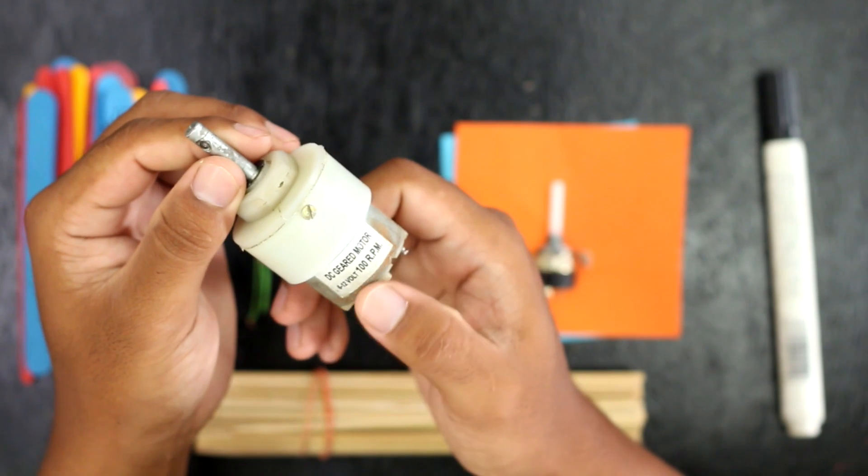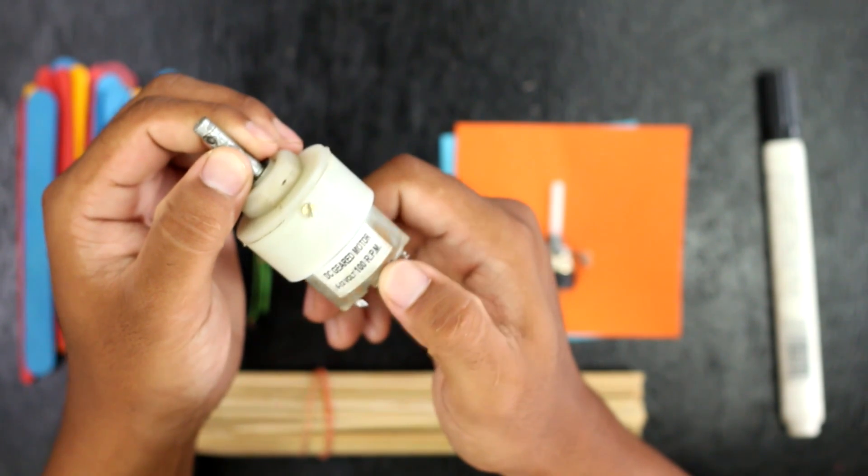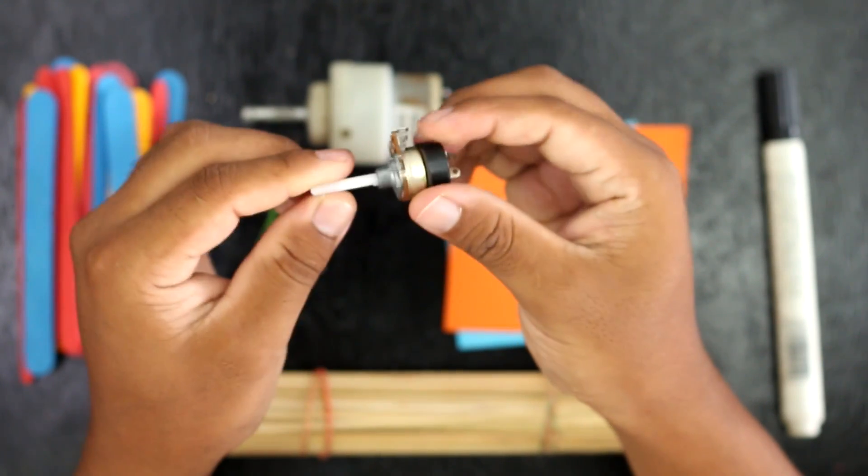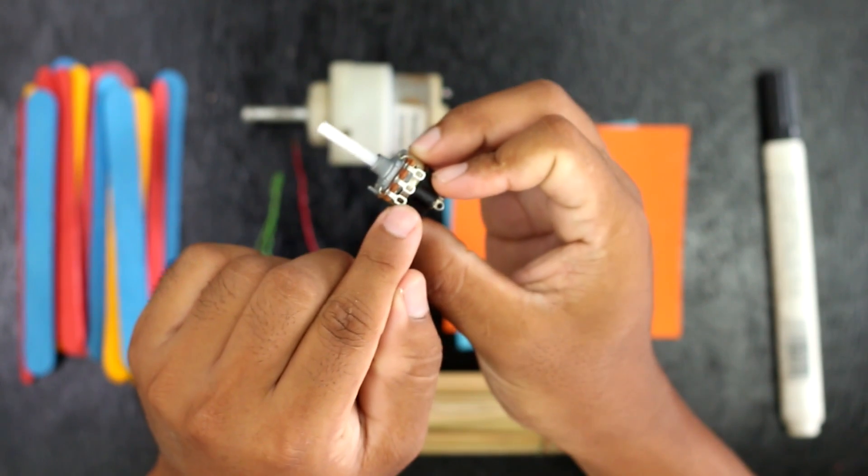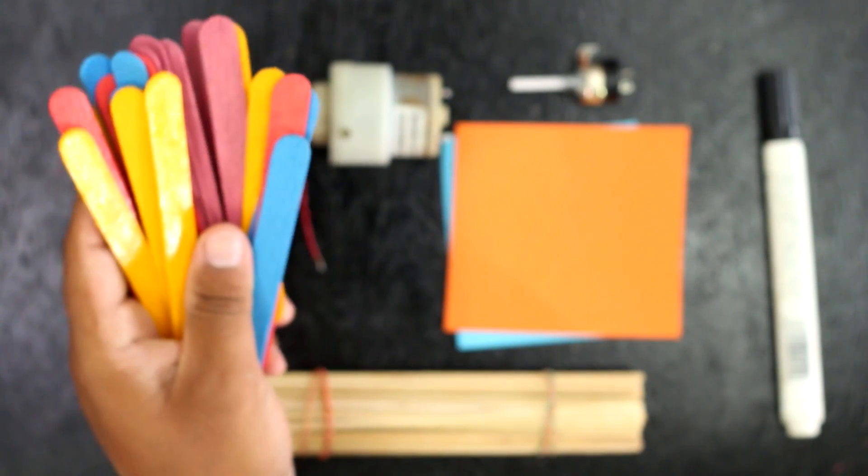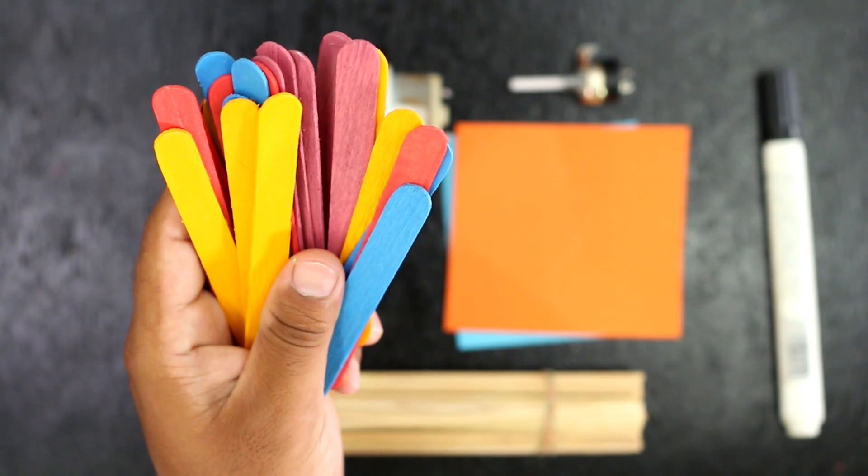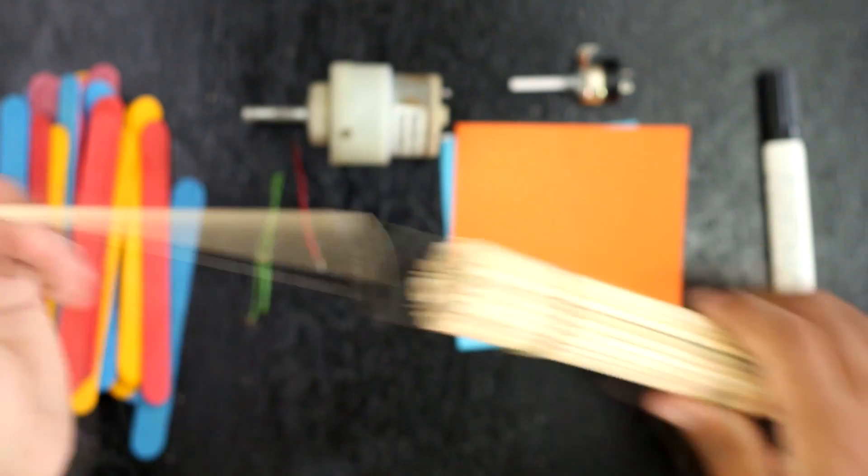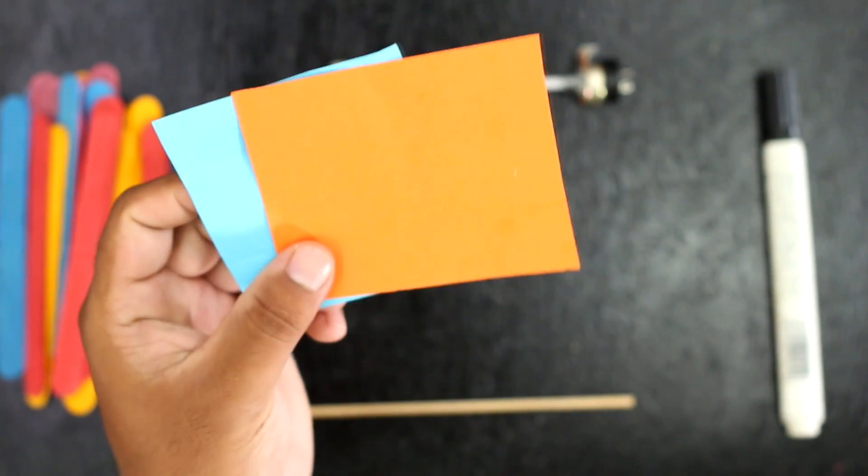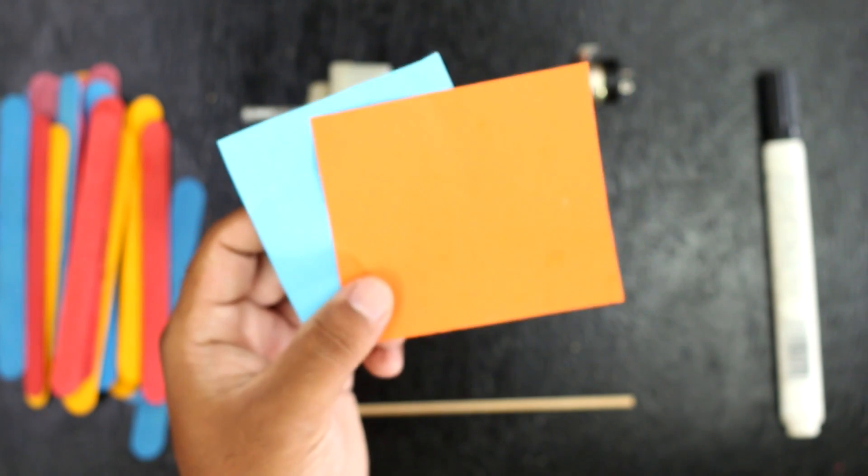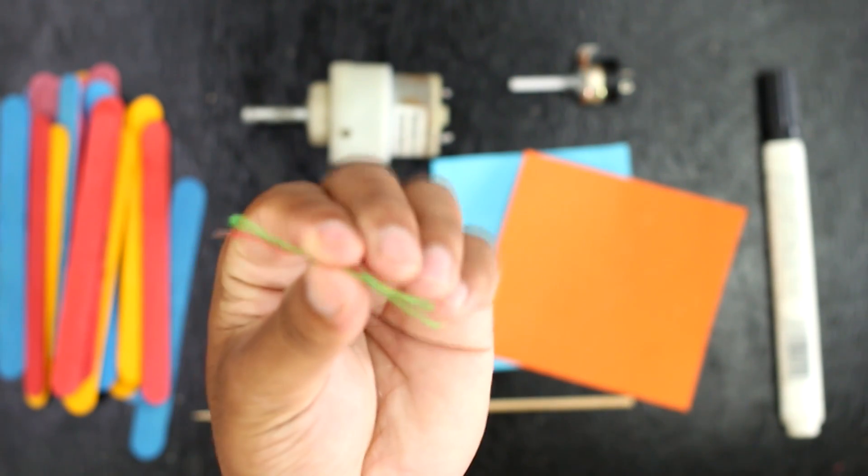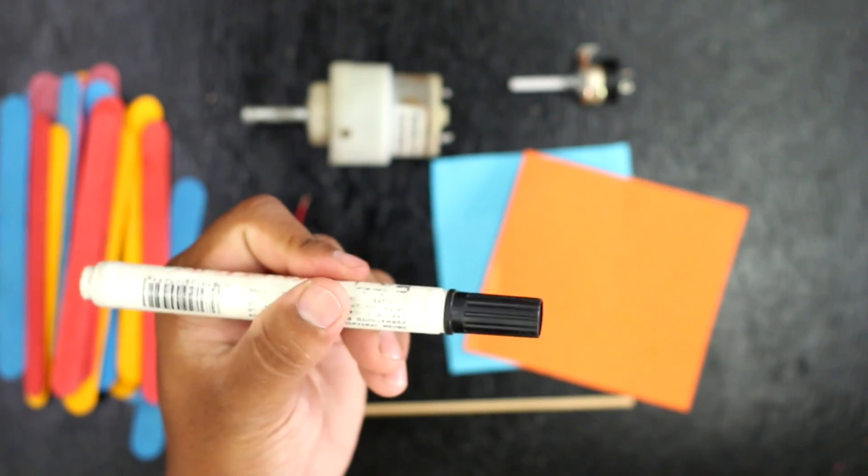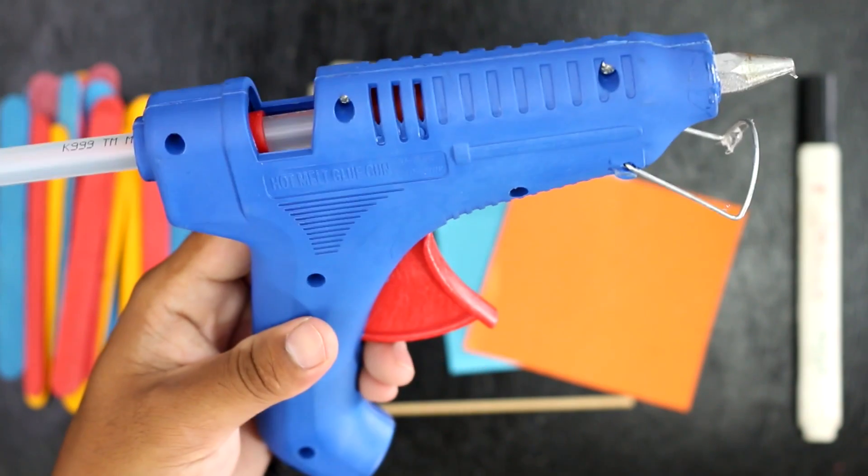Materials I have used for making this ferris wheel are geared motor, potentiometer, colored popsicle sticks, bamboo sticks, colored paper, jumping wires, marker, and hot melting glue.